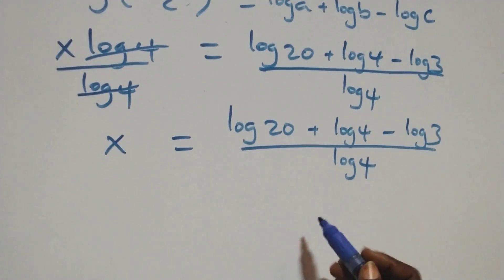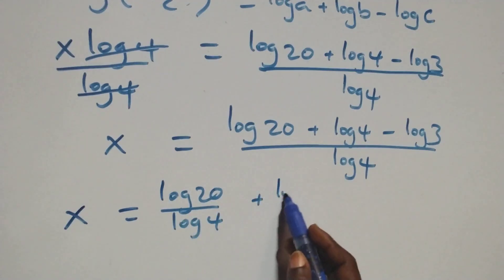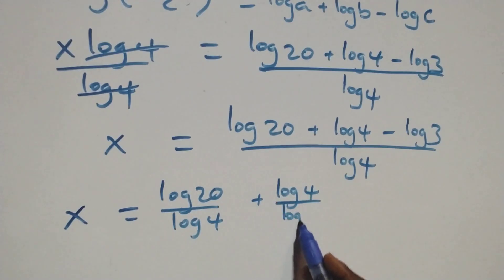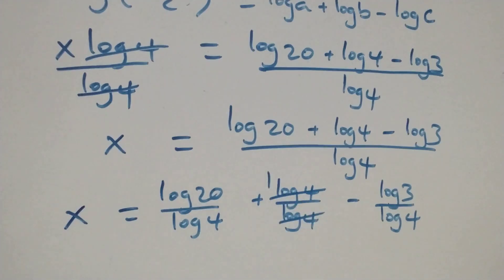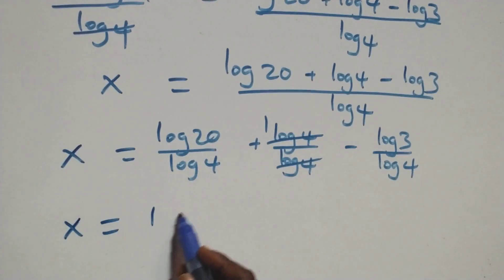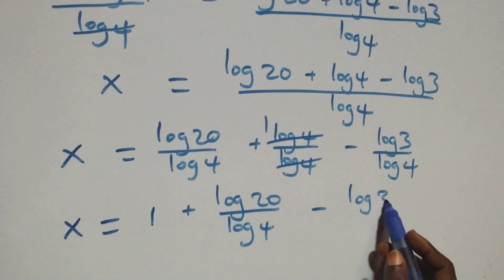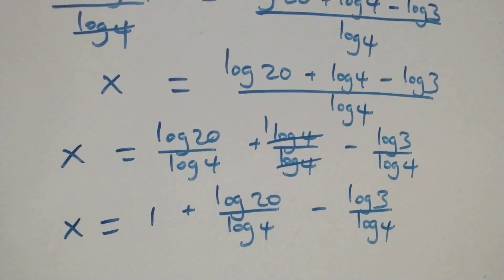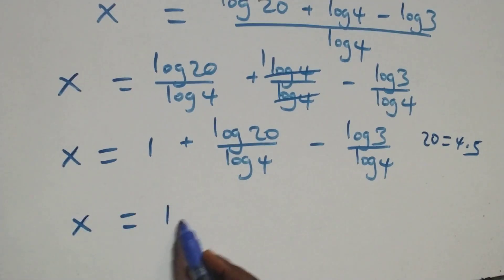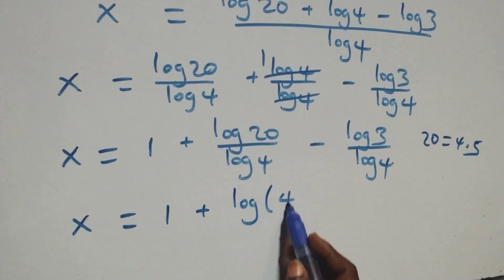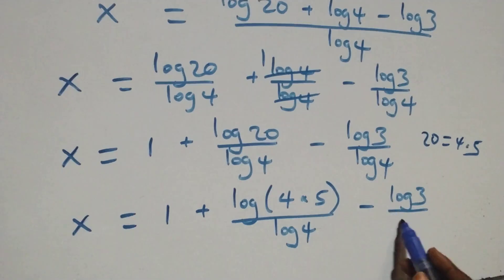Here log 4 cancels with log 4 and we have 1 left. At this, here we have x equals to log 20 over log 4 plus log 4 over log 4 minus log 3 over log 4. We rewrite log 20 as log of 4 times 5, which implies x equals to 1 plus log(4 times 5) over log 4 minus log 3 over log 4.